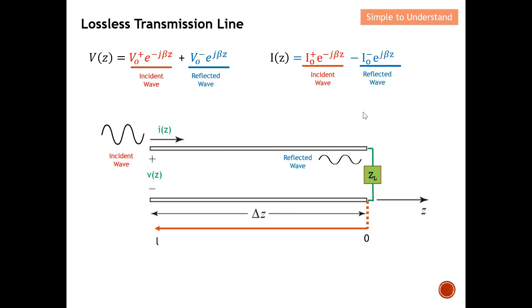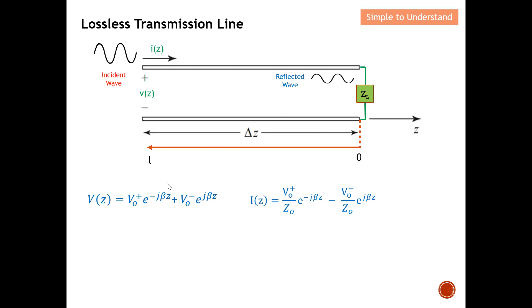I'd like to focus on this diagram again. In the Part 7 discussion, I take the reference at the load, so at the load the reference is zero. When I move to the left, the length of the transmission line is denoted as l, so at that location z equals minus l. For current, I represent the incident and reflected waves using V₀⁺ and V₀⁻, so current is simply voltage divided by impedance.